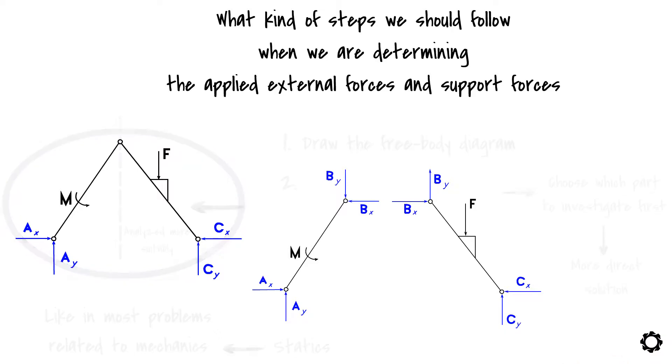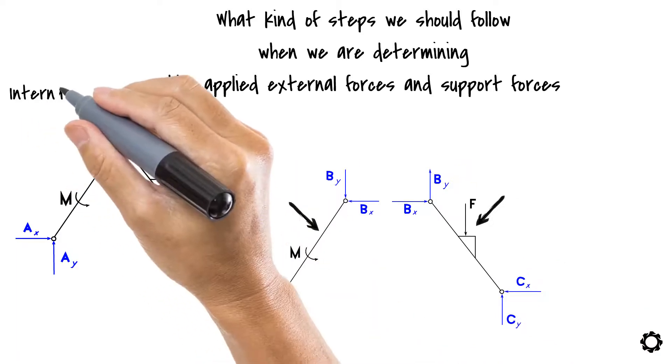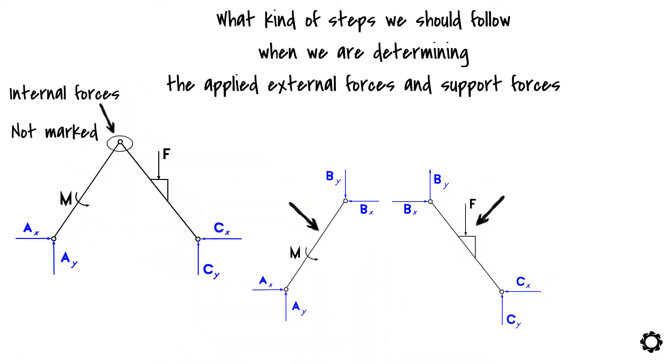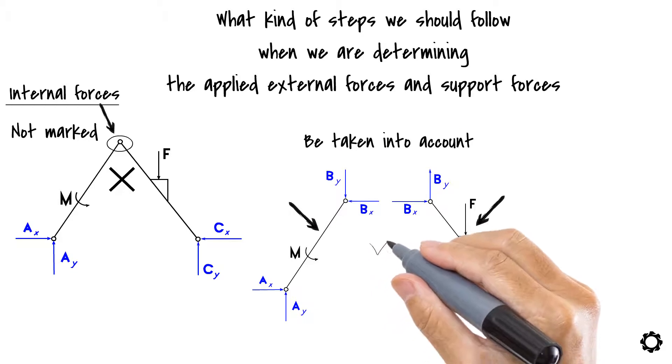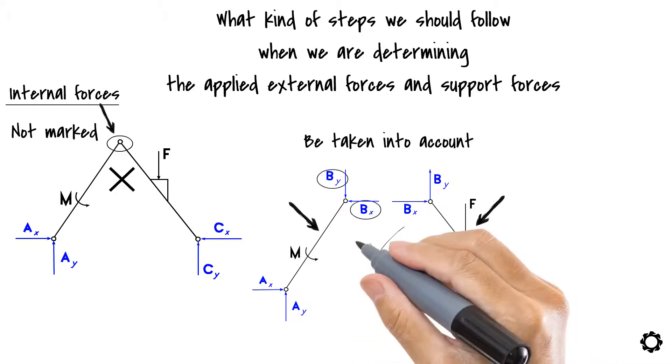Note that if the structure has a connection point in which group of members are connected to each other, then the affecting forces at that point are internal forces which are not marked onto the free body diagram of the system. These must, however, be taken into account in the member's free body diagram because in this case the forces are external.